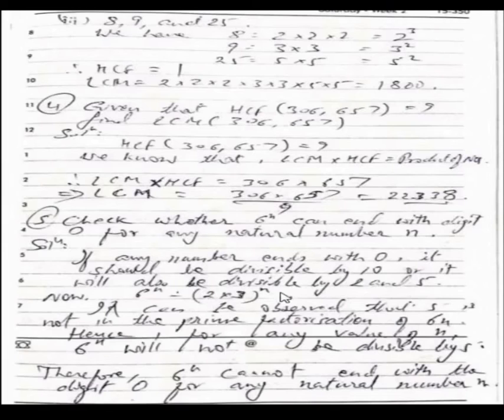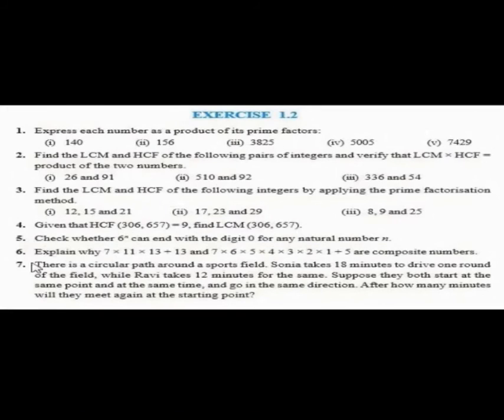6 to the power N is equal to 2 into 3 to the power N. It can be observed that 5 is not in the prime factorization of 6^N. Hence, for any value of N, 6^N will not be divisible by 5 because it is 3 here. So it will not be divisible by 5. Therefore, 6 to the power N cannot end with the digit 0 for any natural number N.